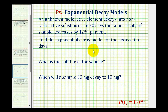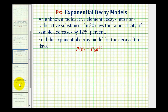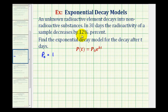Let's start by finding the exponential decay model. This one's a little tricky because we're not given a starting amount and ending amount after 30 days — it just says the amount decreases by 12%. So we can start with any amount we want. Let's let p₀ equal one. If we decrease one by 12%, that means 88% would be left, so p(t) = 0.88. This decrease takes 30 days, so t = 30.